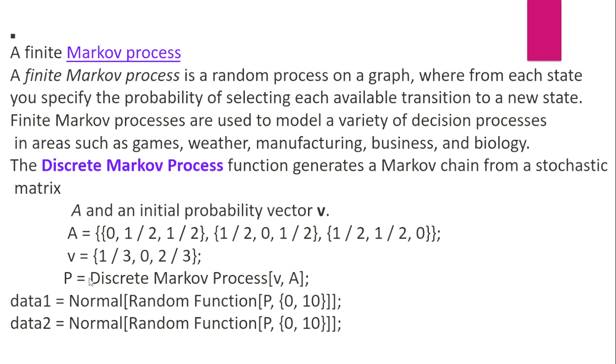By solving this, we shall get the vector V equals {1/3, 0, 2/3}. Here P equals discrete Markov process of V comma A. Data 1 equals Normal random function P with parameters {0, 10}. Data 2 equals Normal random function P with parameters {0, 10}.